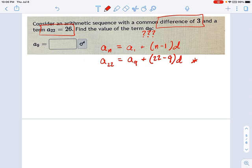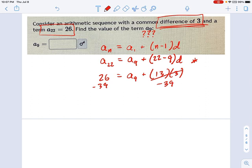So let's proceed. The 22nd term is 26. I don't know what the 9th term is. We'll figure it out. I can do 22 minus 9, that's 13. And d, we were told this at the beginning, d is 3. So 13 times 3 is 39. We're going to subtract 39 from each side, and 26 minus 39 is negative 13. That's how we solve this.